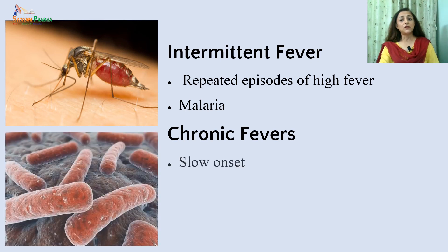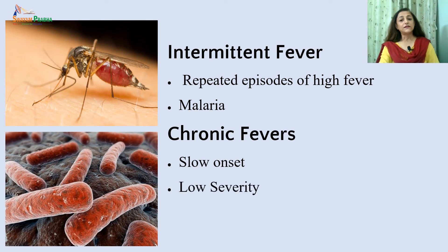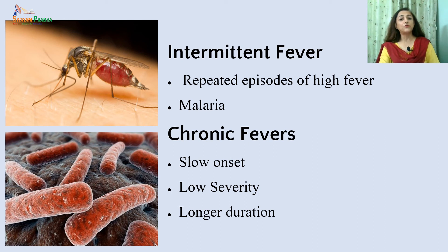The next type of fever is chronic fever. These are fevers where the onset is slow and gradual, severity is low, and they are fevers of longer duration. The temperature may be low but it continues for a much longer time, with a lot of protein breakdown and catabolism setting in. Examples of this type of fever are tuberculosis and AIDS — Acquired Immunodeficiency Syndrome.